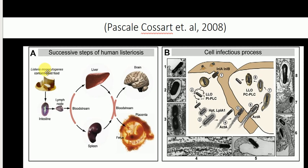When we eat food contaminated with the bacteria Listeria monocytogenes, we get the bacteria along with the food into the intestine. The bacteria enters the intestine, and somehow it crosses the intestinal barriers. It is then transported to the liver and to the spleen, and from the bloodstream it is transported to the brain.